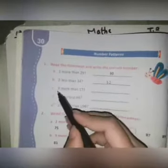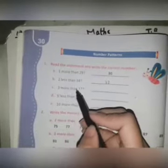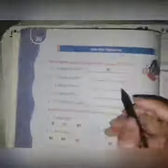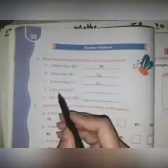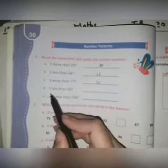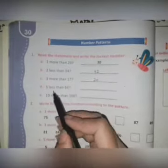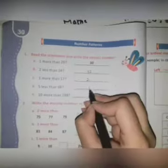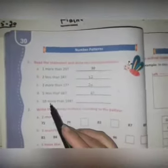3 more than 17. You have more than, it means you are adding. Now 3 add 17, the answer is 20. Five less than 66. Less than means you have to subtract 5 from 66, the answer will be 61.